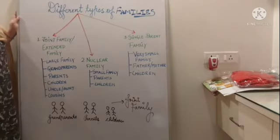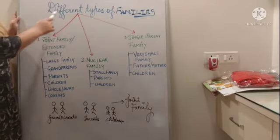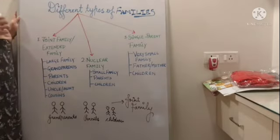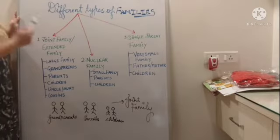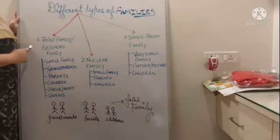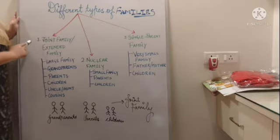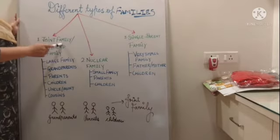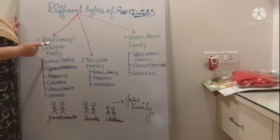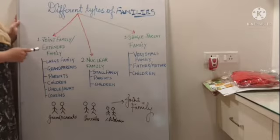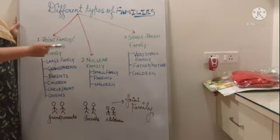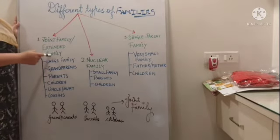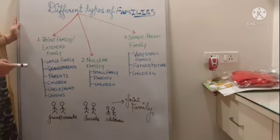So dear children, let's talk about the different types of families on the basis of number of people living in the same house. Based on that, a family is of three types. Number one is joint family — J-O-I-N-T — joint family. It is also known as extended family.